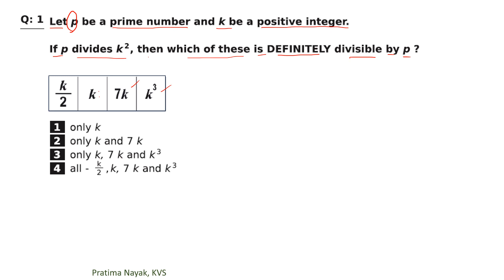We will take the help of fundamental theorem of arithmetic. What it says, if P divides K square, then P divides K. So P divides K means only one is the answer, only K. Anyone can say one is the answer.